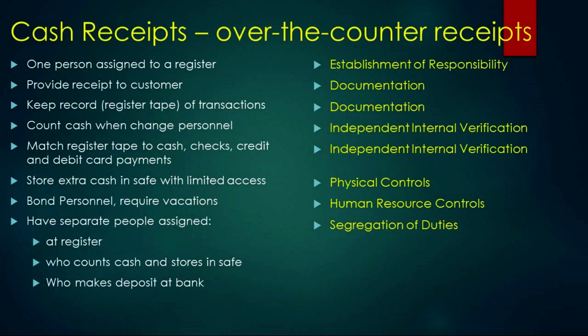One person assigned to a register — that's establishment of responsibility. If the situation says three people assigned to a register, that would be a violation of that element. Providing a receipt to the customer is documentation, and the customer actually serves as an auditor — if they look at their receipt and it says ten dollars but they gave fifteen, that serves as a counter-check to make sure the transaction was done correctly.